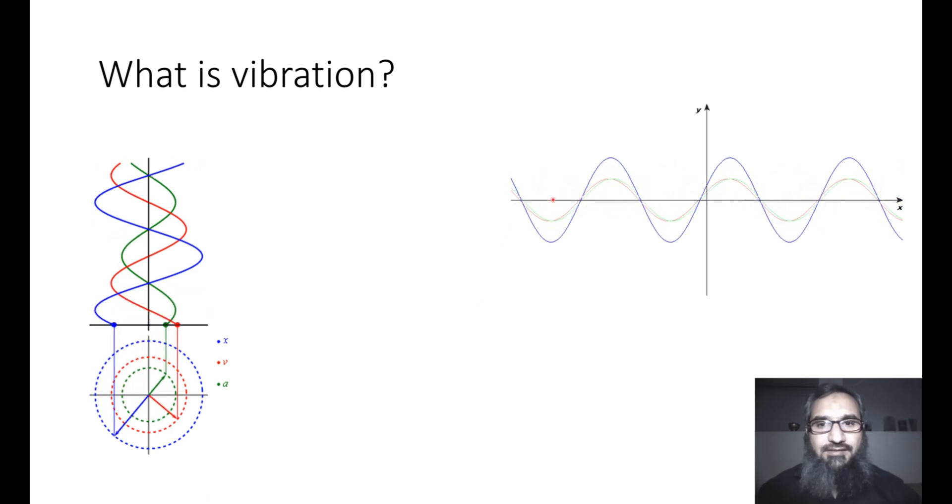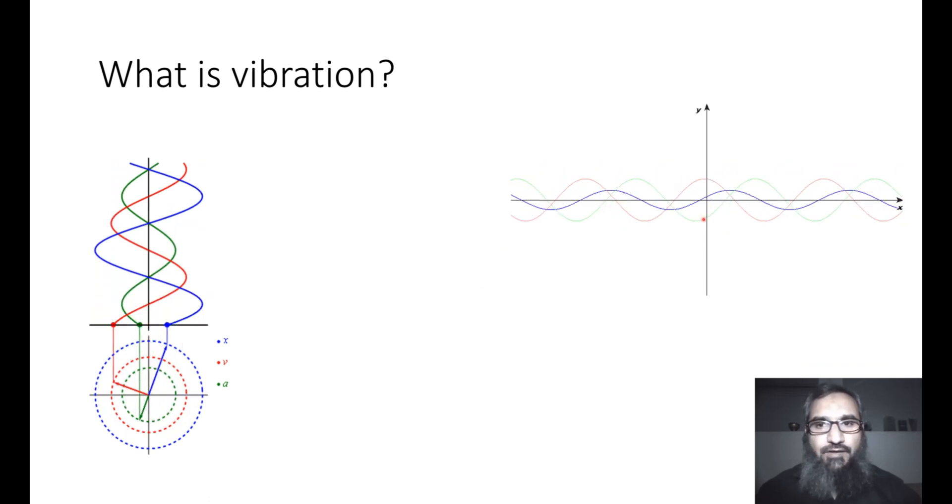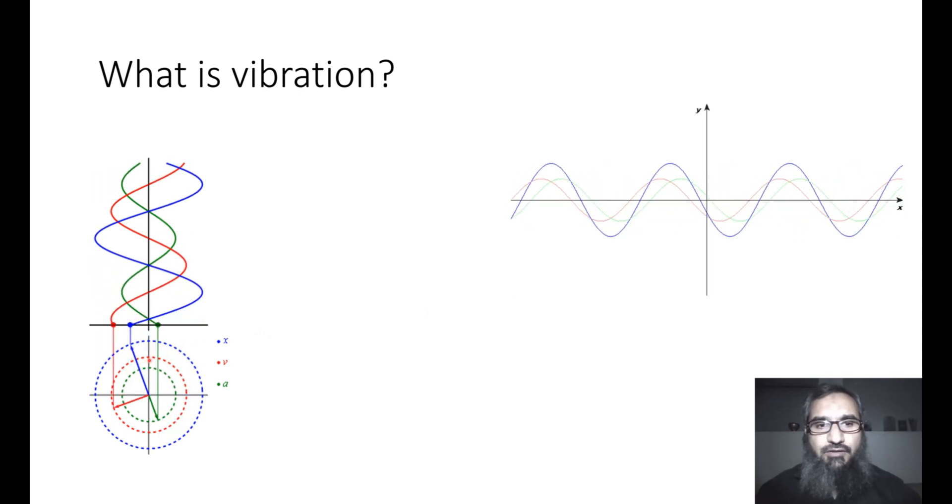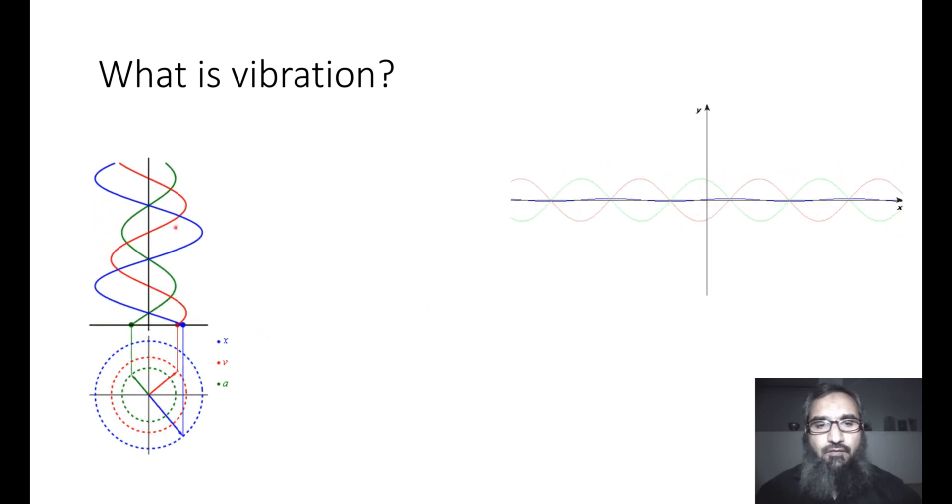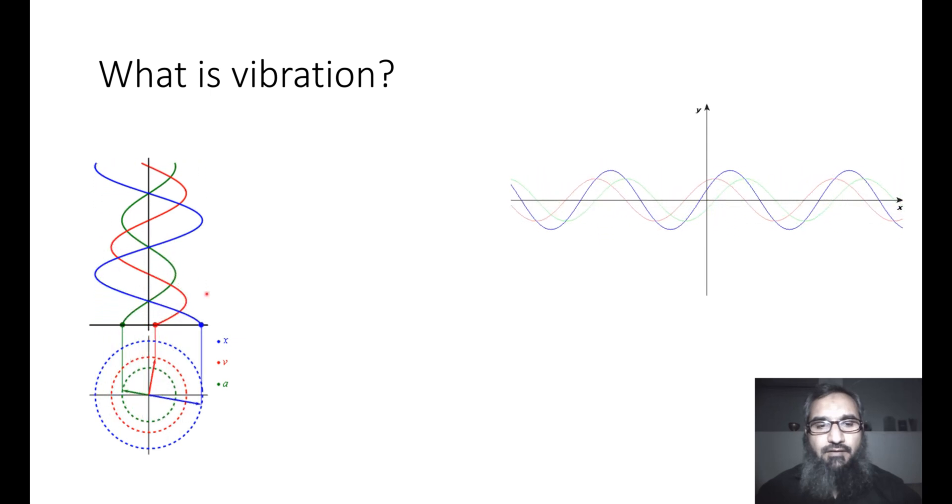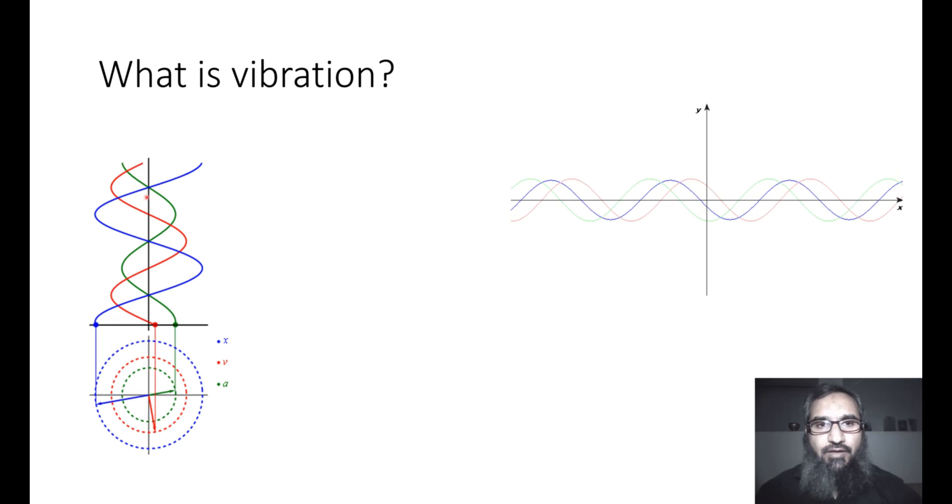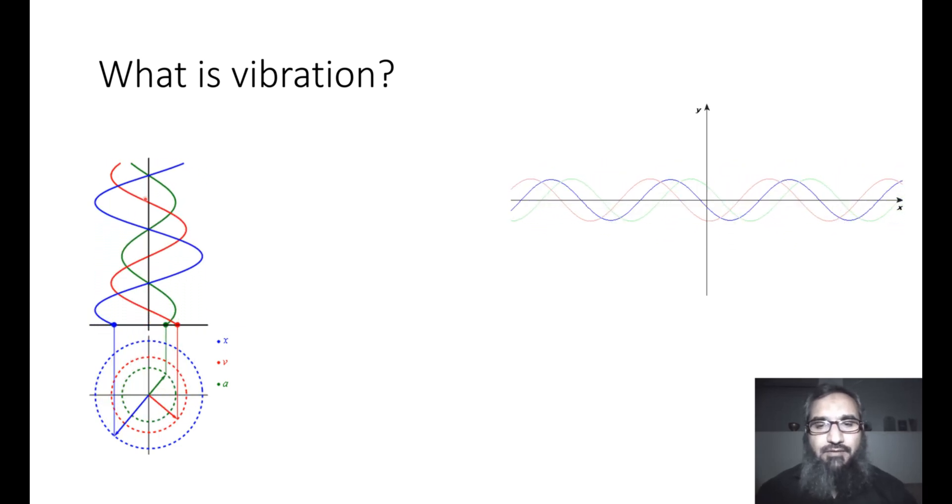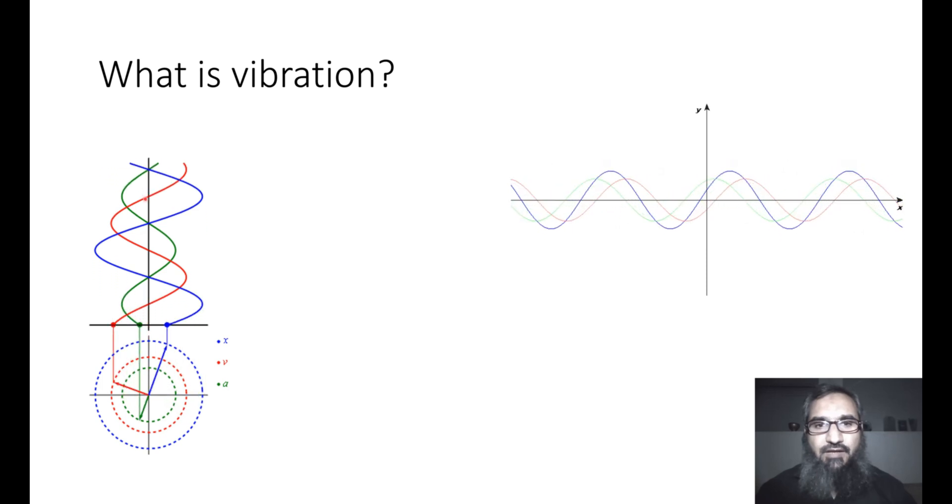You can see this waveform which is moving up and down, or this circular motion also being plotted in the form of a wave in a very periodic way. So these are examples of vibration in which we have a repetitive to and fro motion.